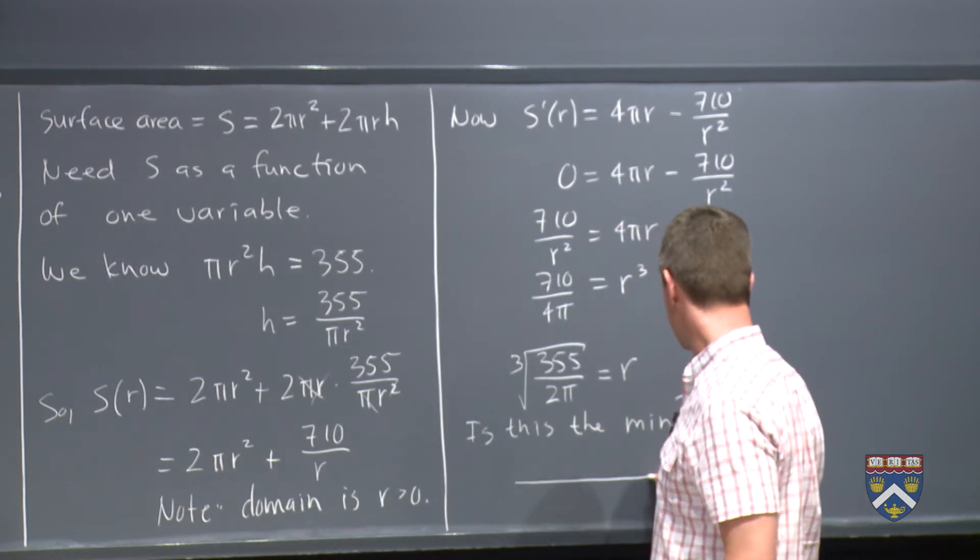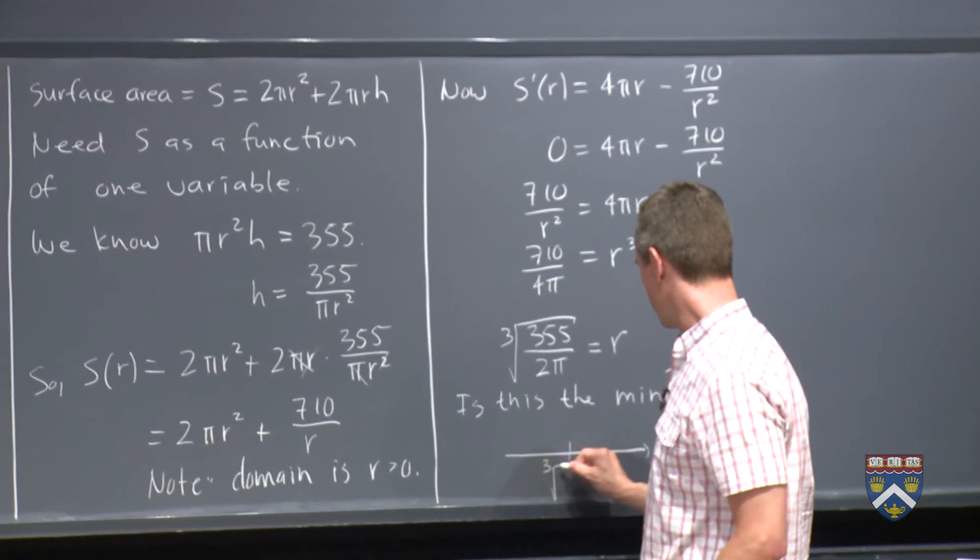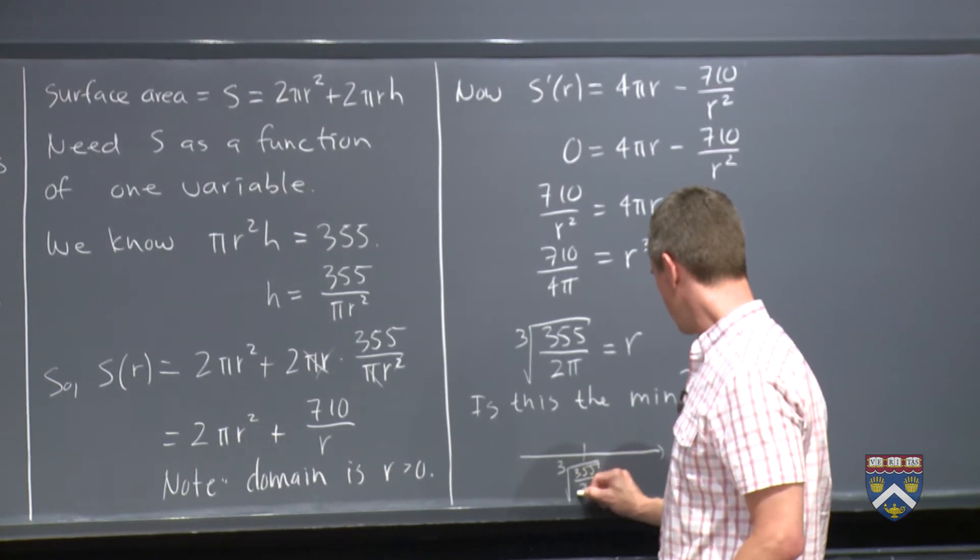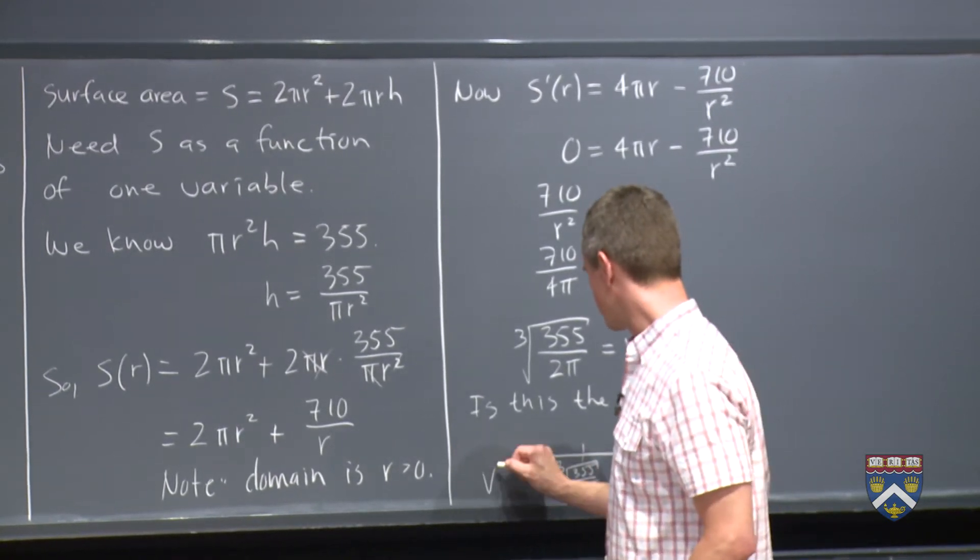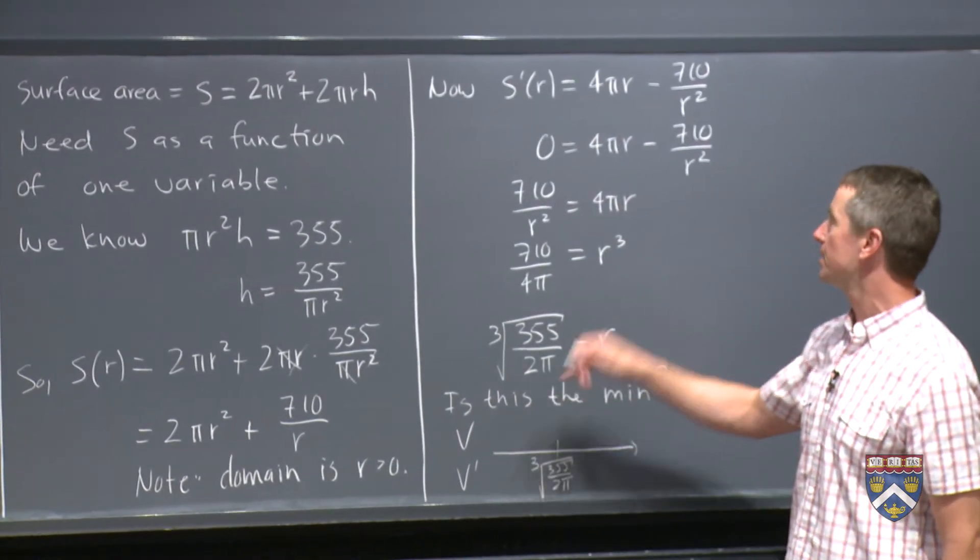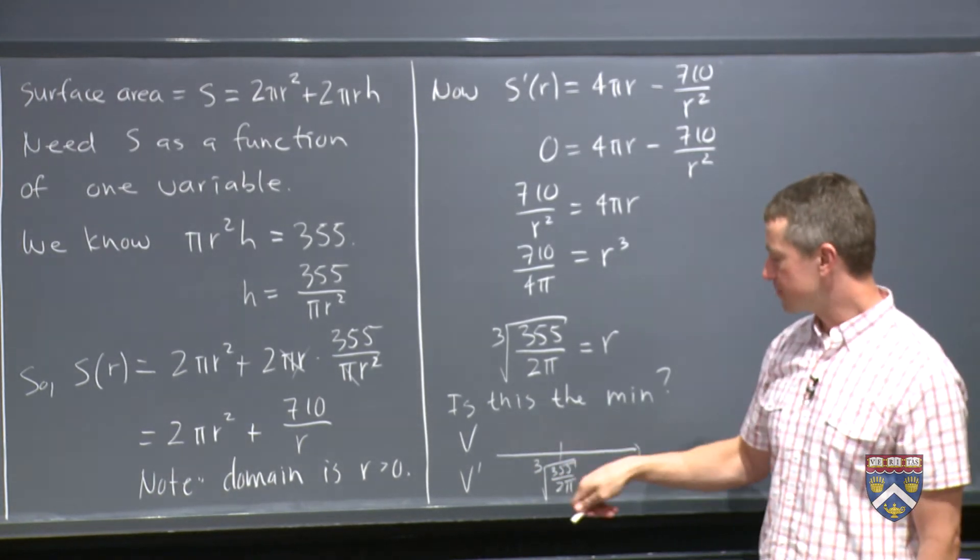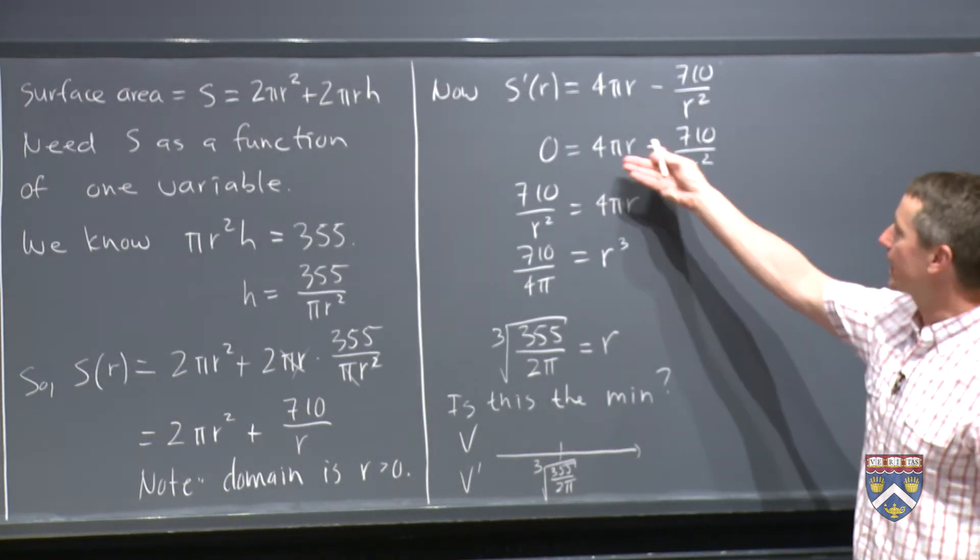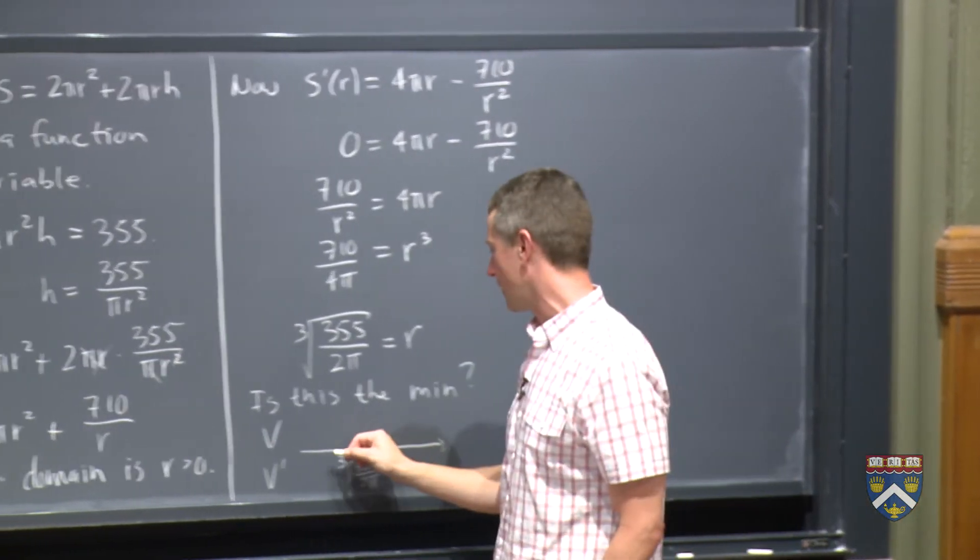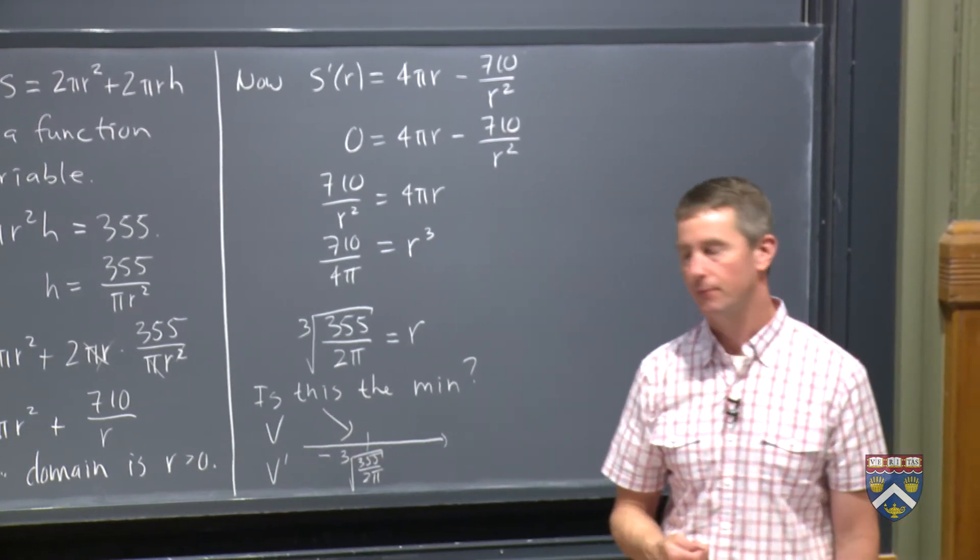So we do our number line just as usual. I'm going to put here my critical point, cube root of 355 over 2 pi. It would be nice to pick 0 over here, but remember, 0 isn't in the domain. And if I try to plug in 0, the function will be, the derivative will be undefined. But this number is bigger than 1, so I can plug in 1, and if I get 4 pi times 1, that's around 13, minus 710, that's definitely a negative number. So v is decreasing out there, which is what we're hoping for because we're looking for a min.